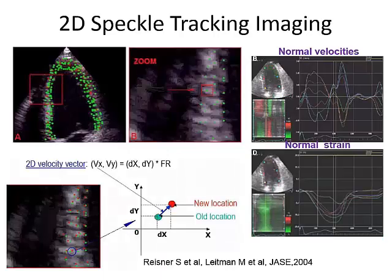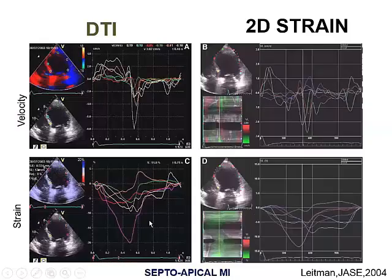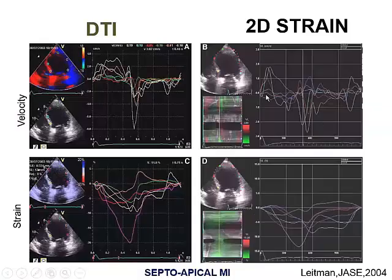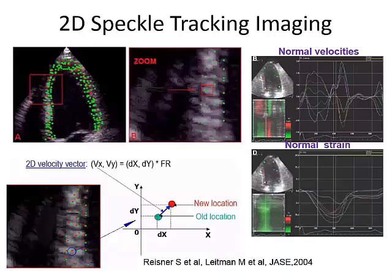For those of you who are not familiar with the technique: we have known for a very long time that ultrasonic images contain speckles. Now with modern computer technology, we are able to track these speckles and follow them as they move from one location to another. If we know the time elapsed for this motion, we can calculate velocities. If we look at velocities at several areas along the left ventricle — in longitudinal, circumferential, and even radial directions — we can calculate a parameter called strain, which is really the deformation of the ventricle.